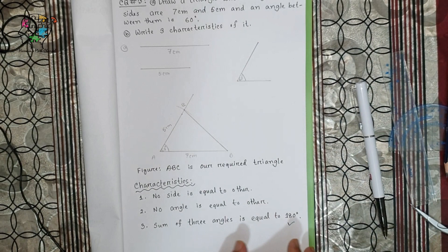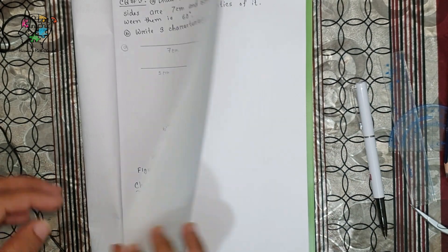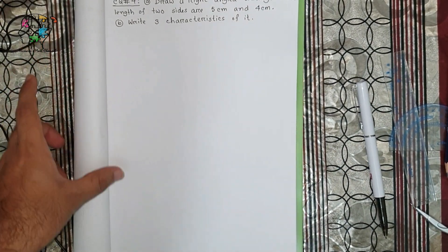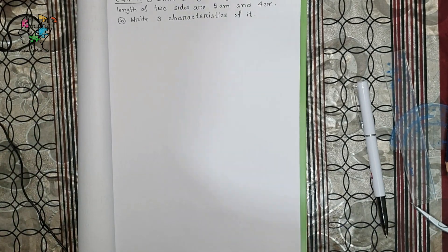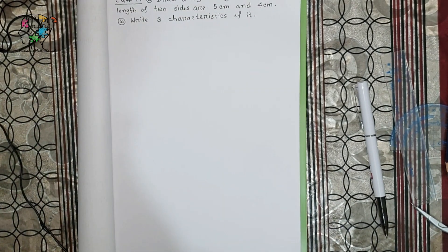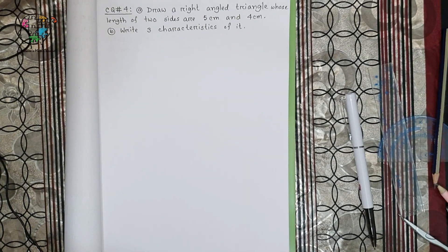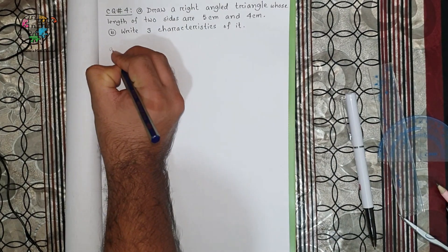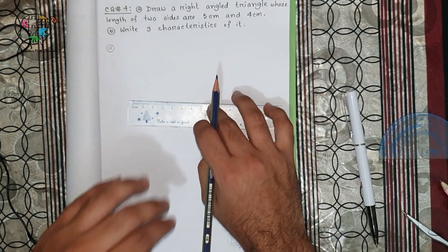Now we move on to question number four. Question number four A: draw a right-angled triangle whose length of two sides are 5 centimeters and 4 centimeters. Question number B: write three characteristics of it. First we have to draw two sides which are 5 centimeters and 4 centimeters.